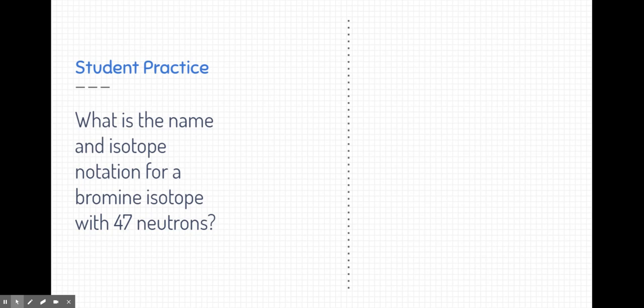The question asks, what is the name and isotope notation for a bromine isotope with 47 neutrons? Well, in order to answer this question, we need to jump to the periodic table and get a little bit of information, but not all of it.